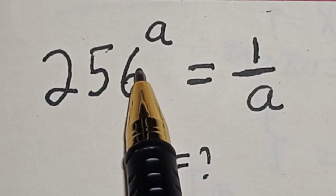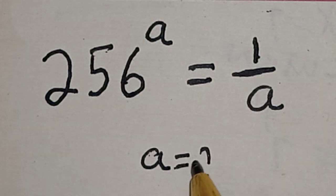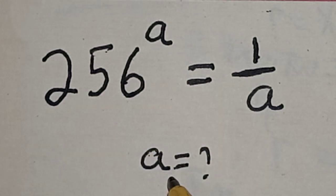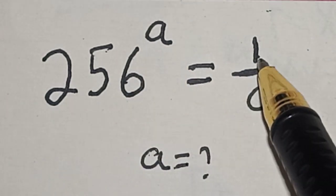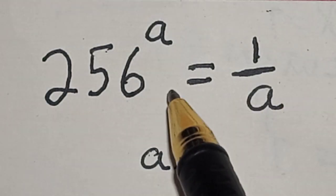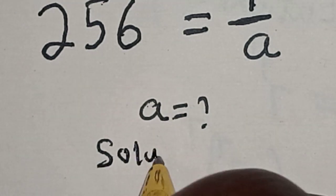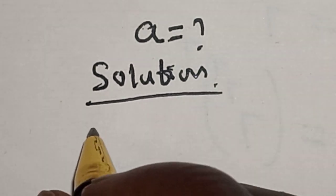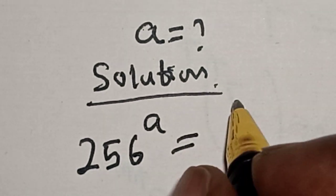256 raised to power a is equal to 1 over a — what is the value of a? Hi everyone, welcome to my class. In this class we quickly want to find the value of a from this given equation: 256 raised to power a is equal to 1 divided by a. But before we proceed, please don't forget to like, share, comment and subscribe. Thank you.